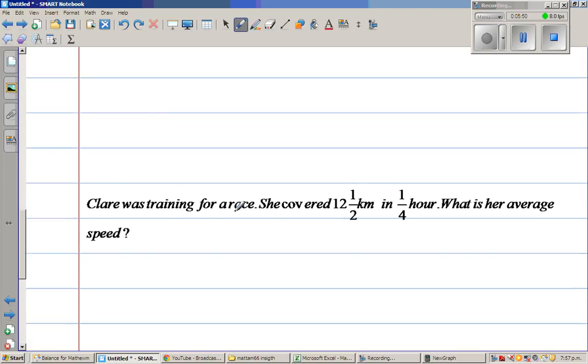So let us look at one more question. Claire was training for a race. She covered 12 and a half kilometers in a quarter hour. What's her average speed? So let's write the fact. So you can say in a quarter hour, she covered 12 and a half kilometers. So in half an hour, she covered how much? Double of this, a quarter, or a half is double of a quarter. So this is 25 kilometers.